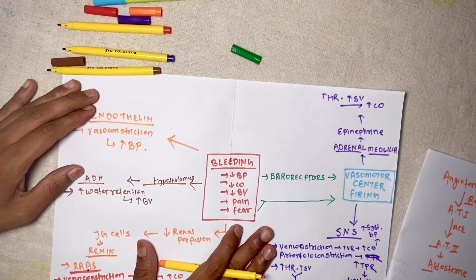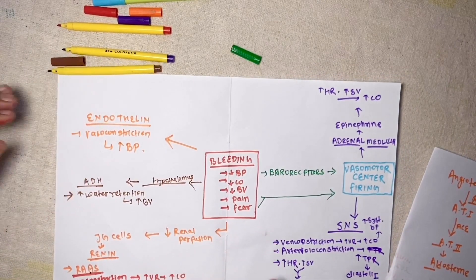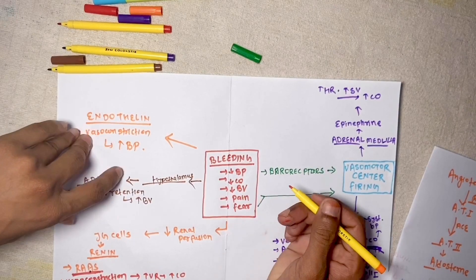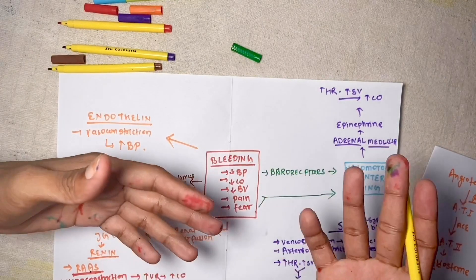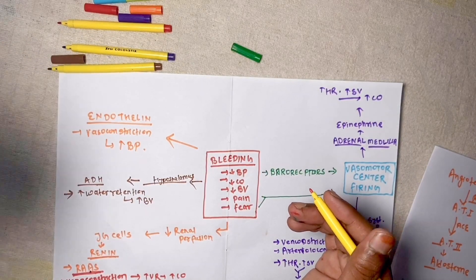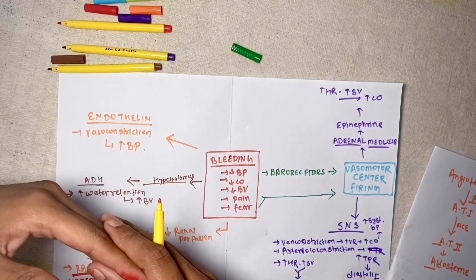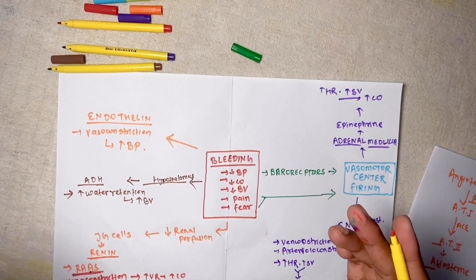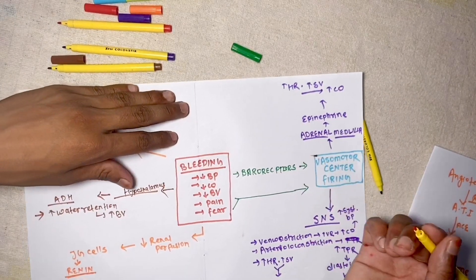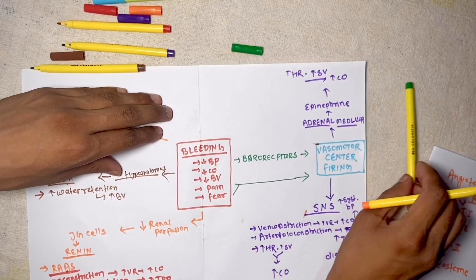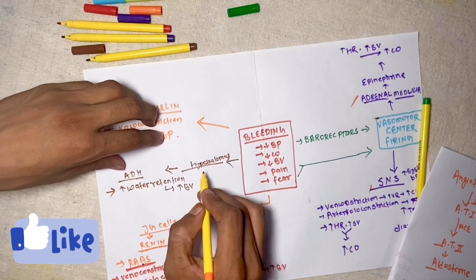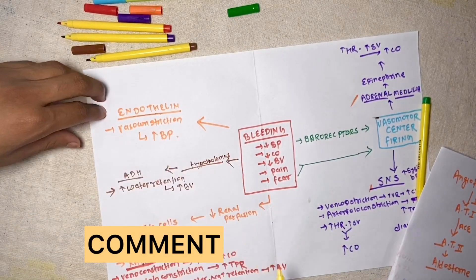These are the five components that work when there is a decrease in blood pressure or cardiac output. They try to increase cardiac output through different mechanisms and also increase blood volume, raising blood pressure so that vital organs and organs distant from the heart receive an adequate blood supply. The components are: the vasomotor center, which activates the sympathetic nervous system and adrenal medulla; the juxtaglomerular cells activating RAAS; the hypothalamus releasing ADH; and endothelin released by the endothelium of blood vessels.